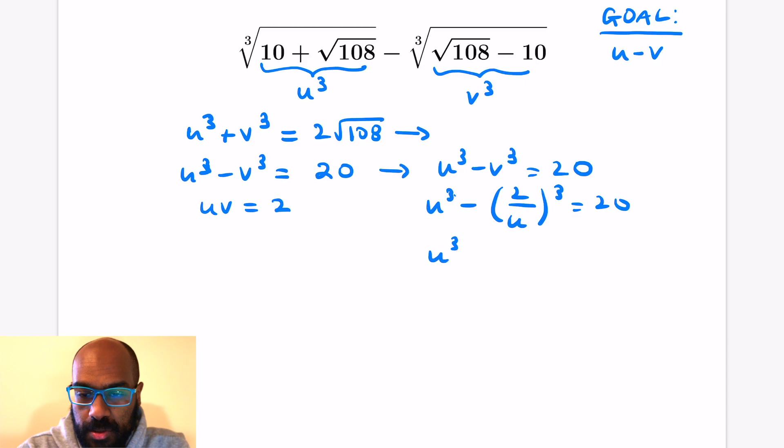So then u cubed minus 8 over u cubed is 20, and then multiplying by u cubed we'll get a quadratic in u cubed itself. It's u to the 6 minus 20u cubed minus 8 is 0. We can be even more explicit about how that's a quadratic in u cubed.